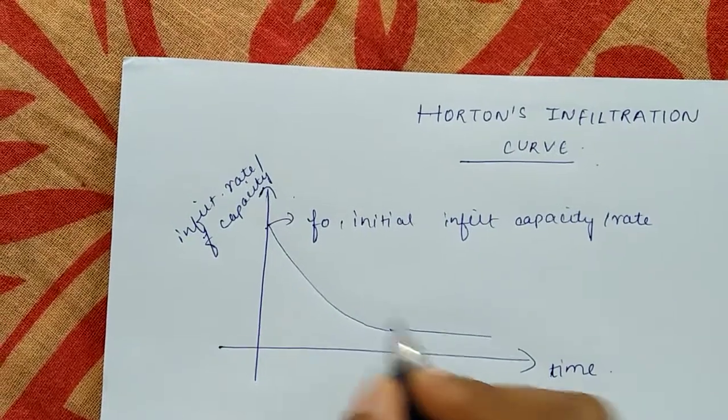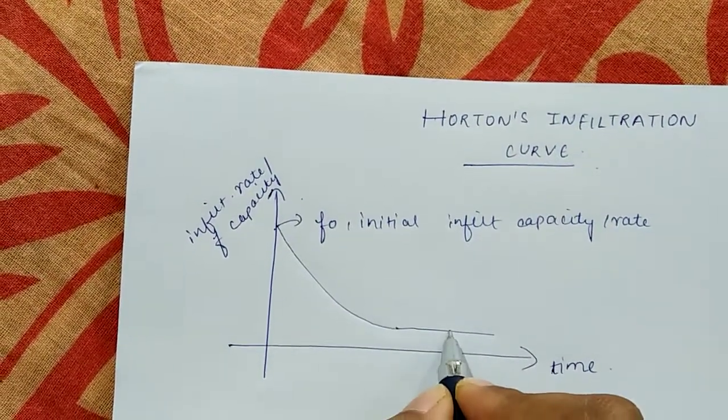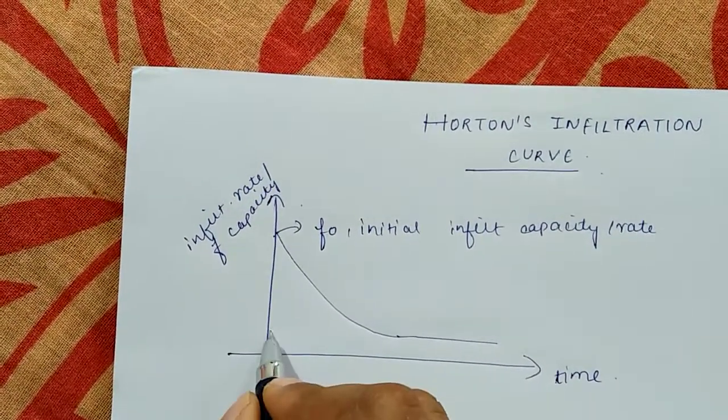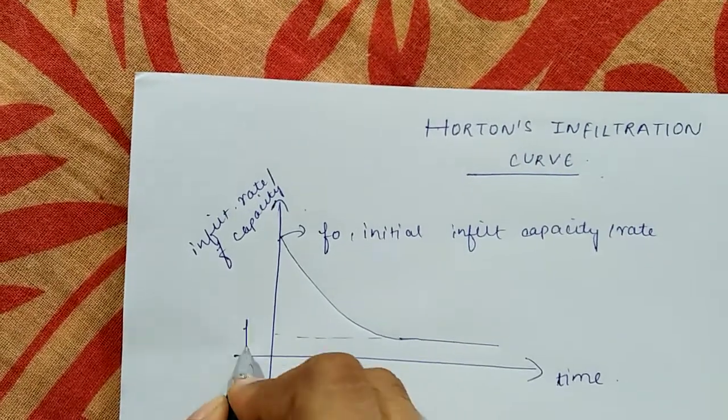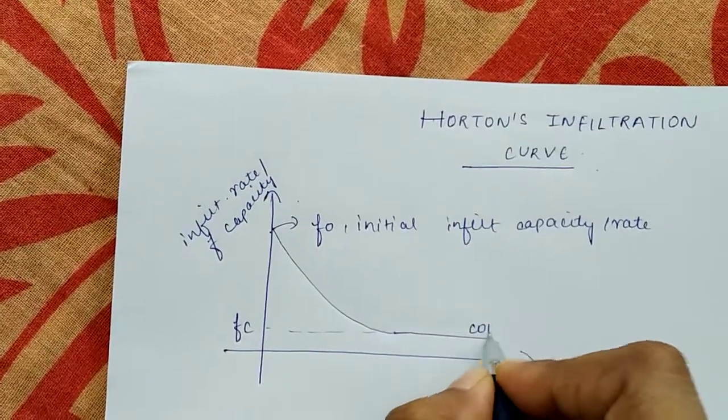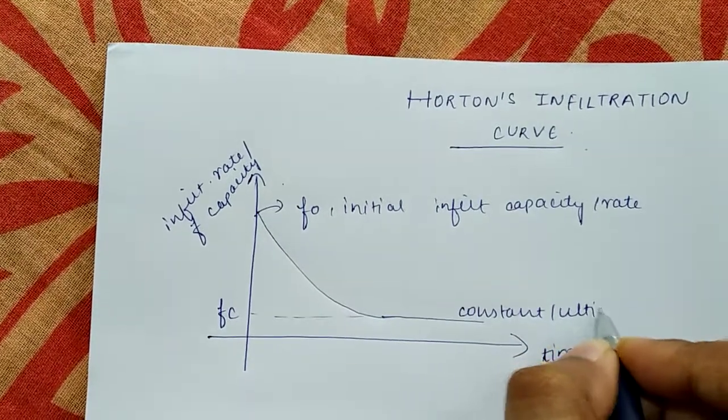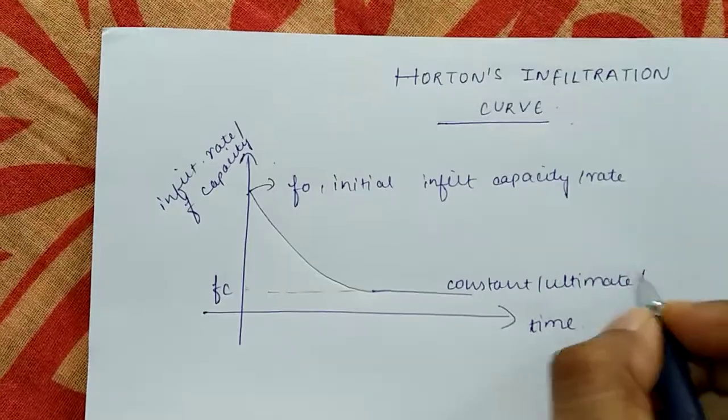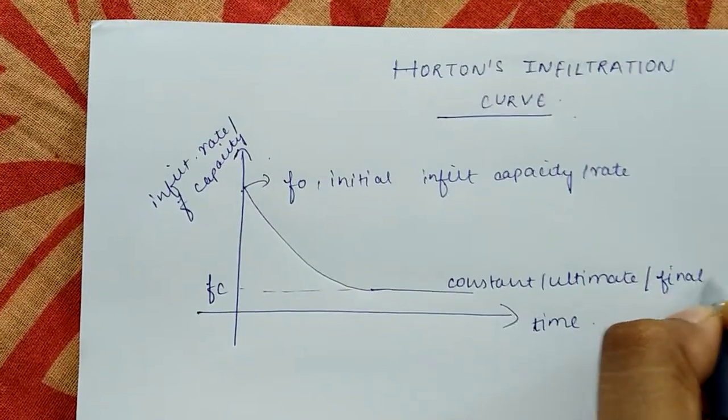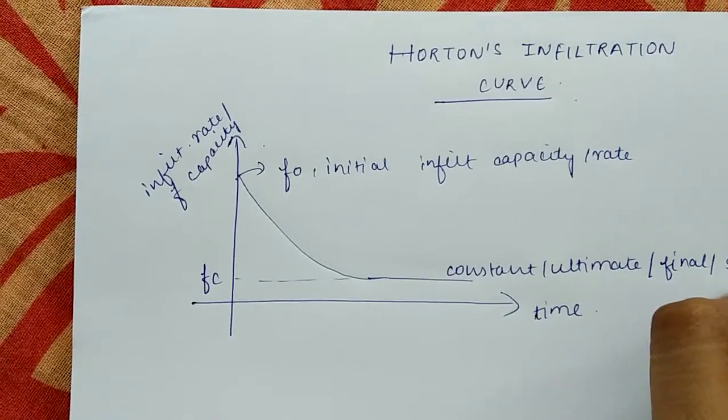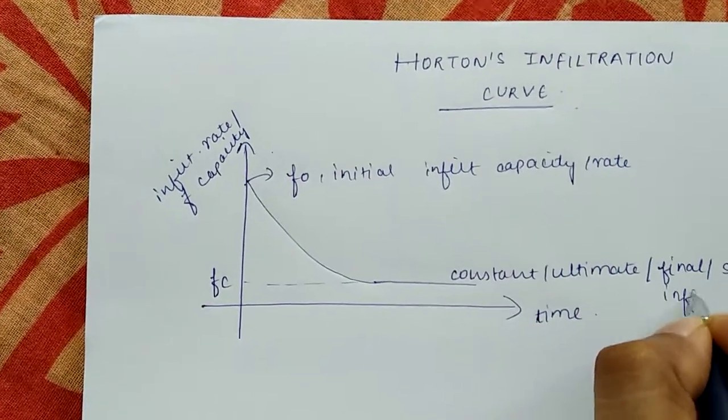This constant value which we attain after a very long time is called constant, or ultimate, or final or steady infiltration rate.